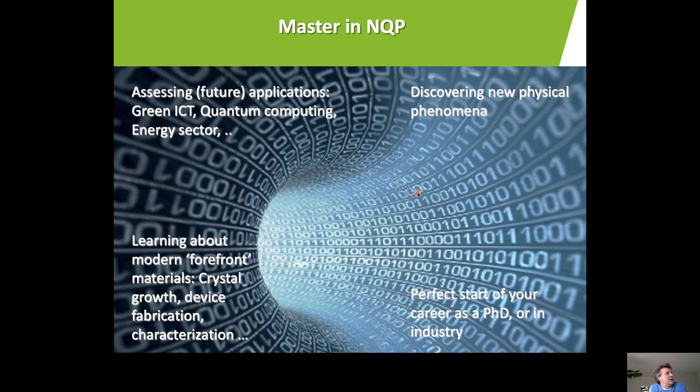If you decide to do your master within this nano quantum photonics track, you will be involved in assessing future applications. You will work on green, energy-efficient information technologies, quantum computation, and there are also applications in the energy sector like solar cells. You will be involved in the discovery of new physical phenomena, and you will learn about modern forefront materials, crystal growth, device fabrication, and characterization. Such a master is a perfect start of your career — you can either start as a PhD or find plenty of opportunities within the industry.